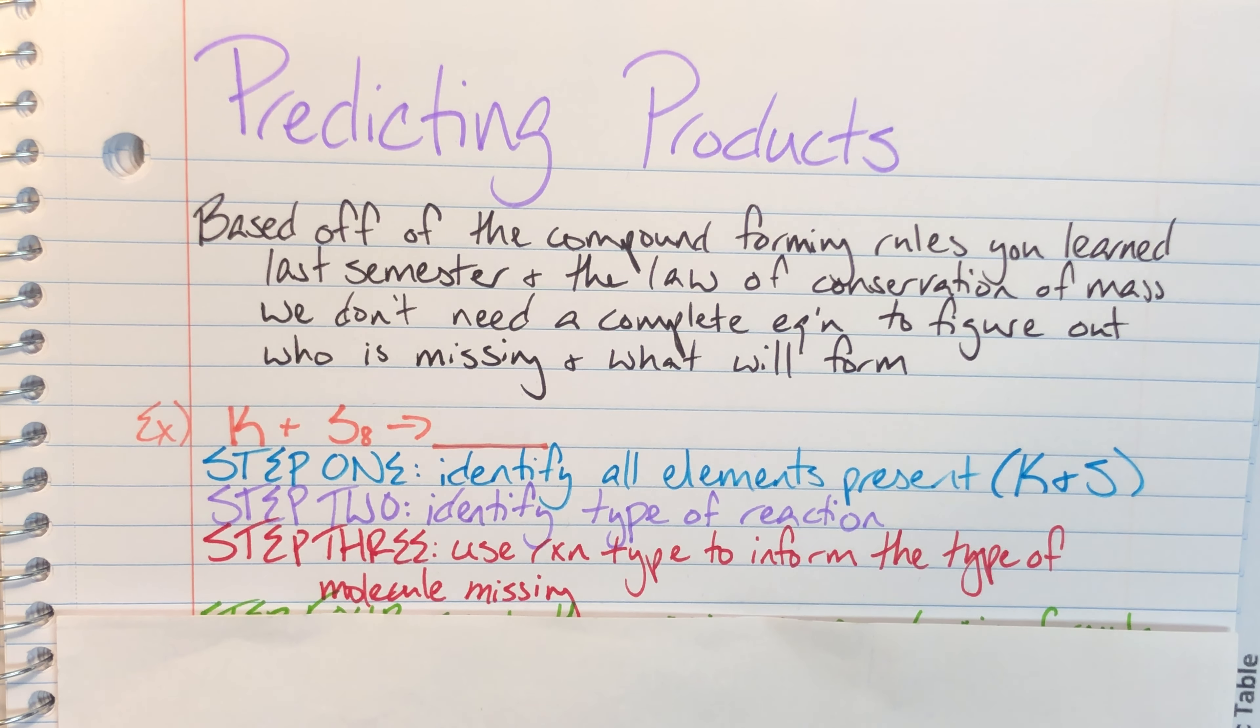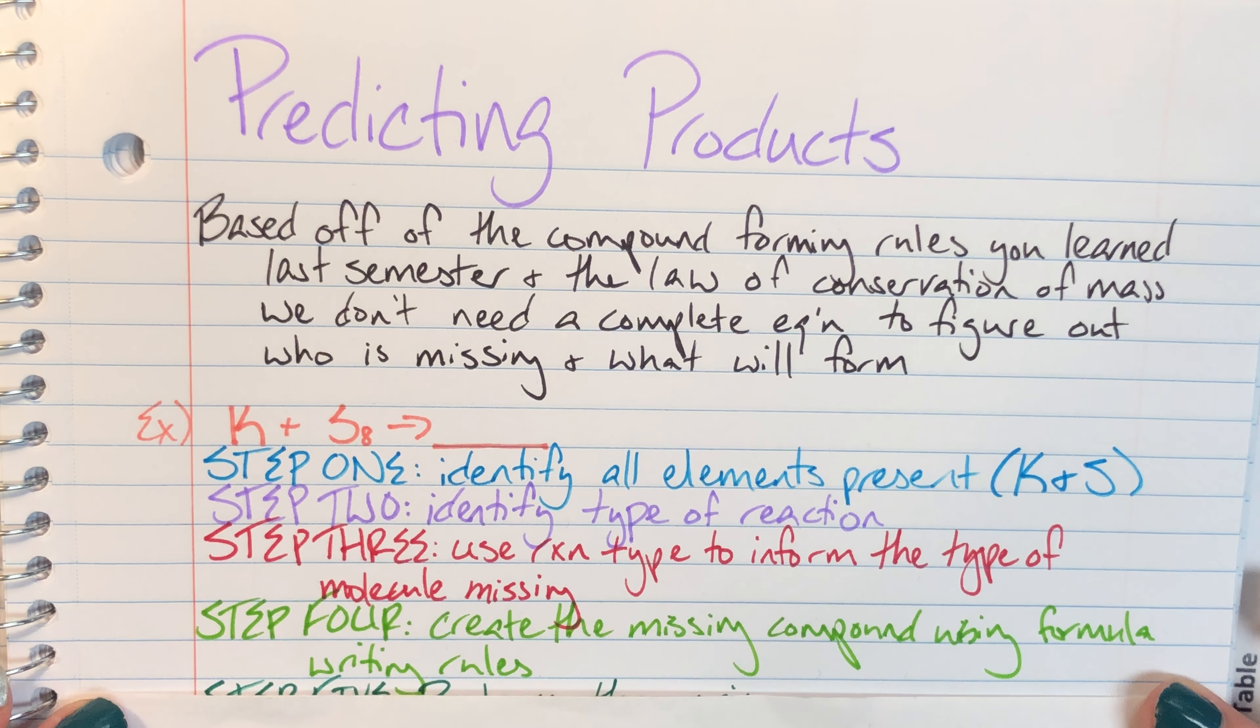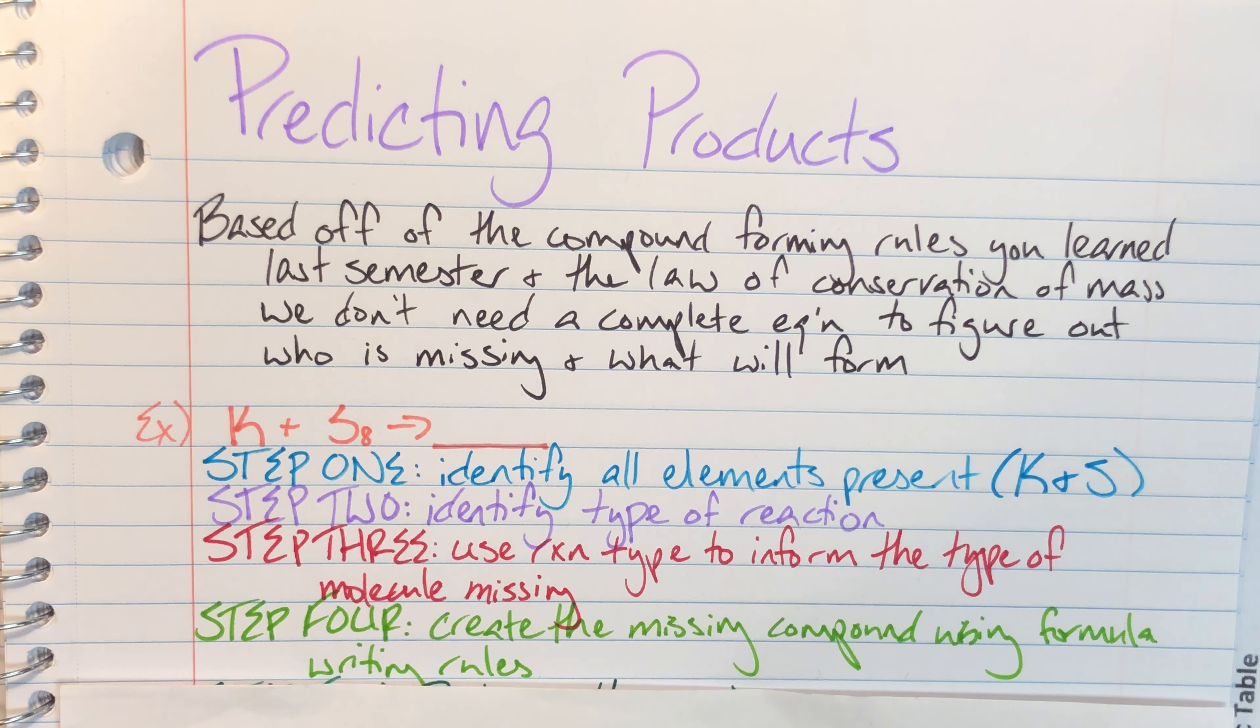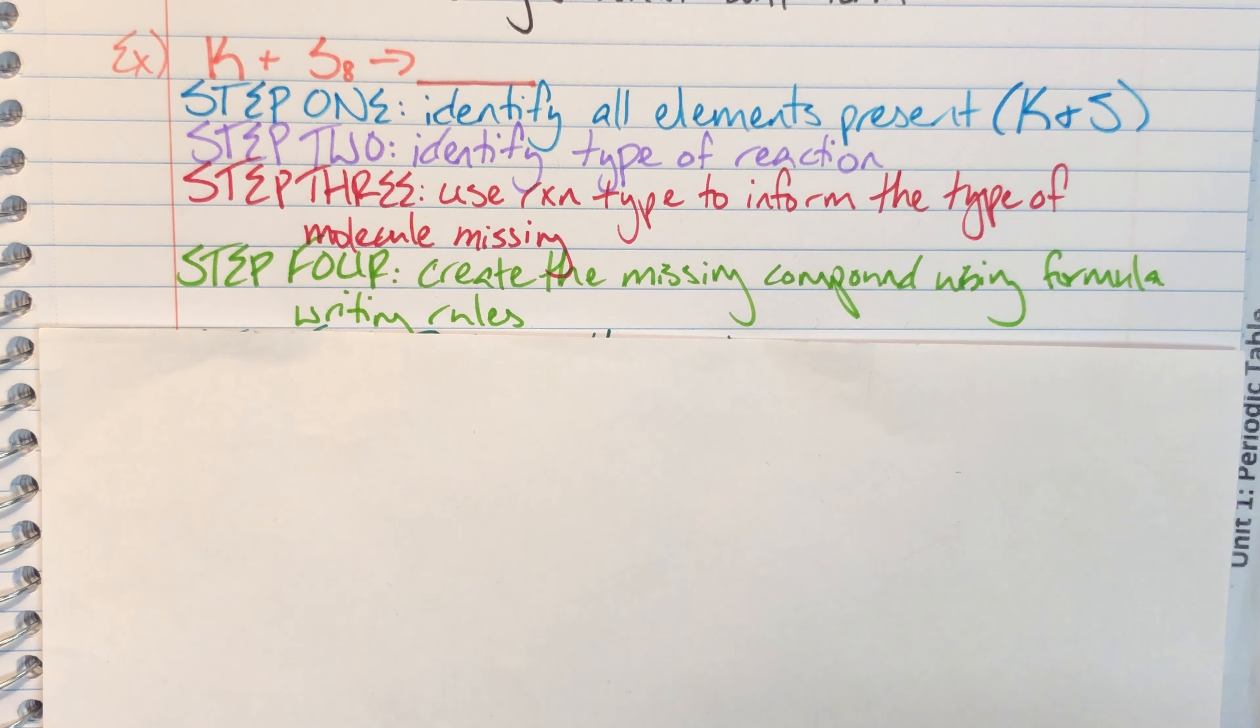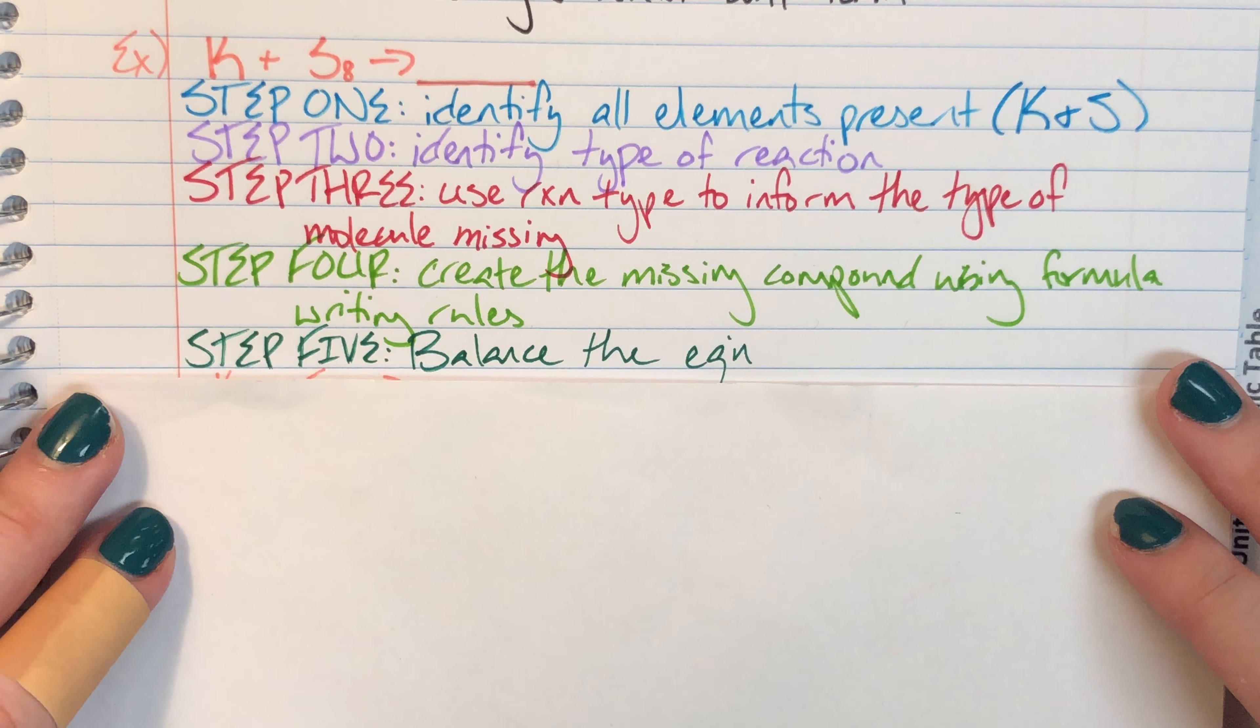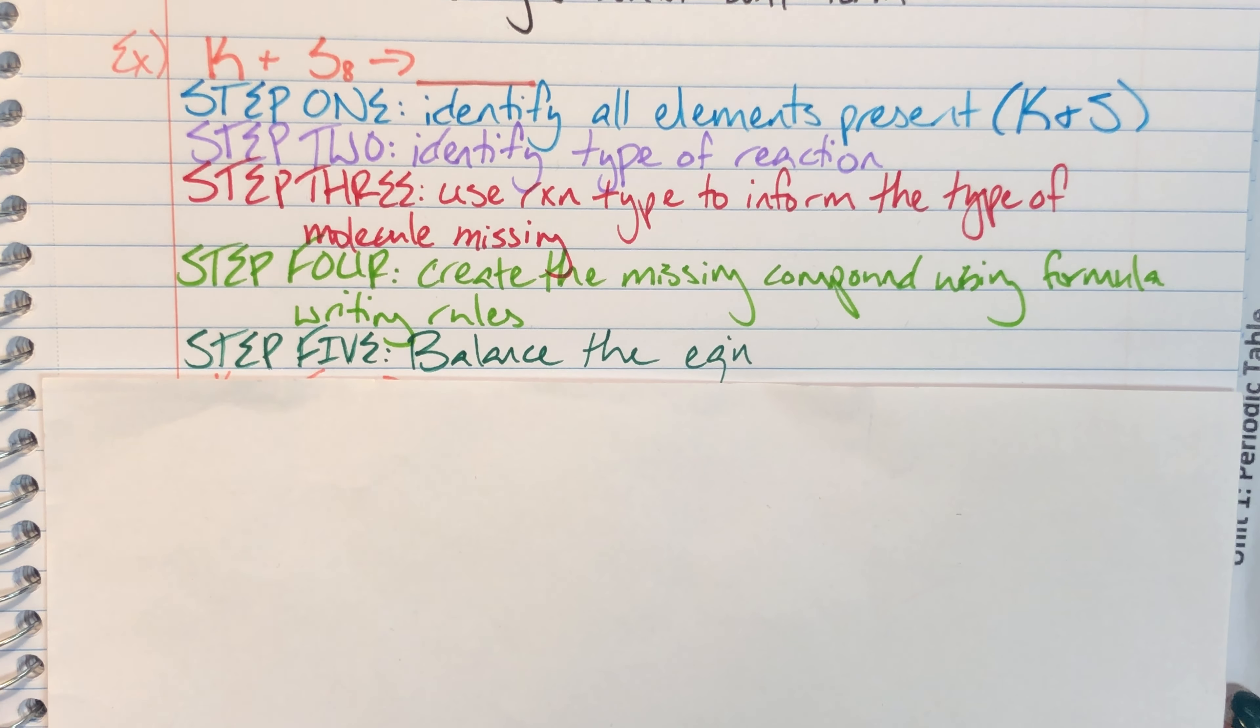So if I know that this is a combustion reaction, then I know that I am going to have a particular set of things that must be present. Step four, I'm gonna go ahead and create that missing compound using my formula writing rules, so I'll make sure that compound appears appropriately. And step five, I'm gonna go ahead and balance the actual equation.